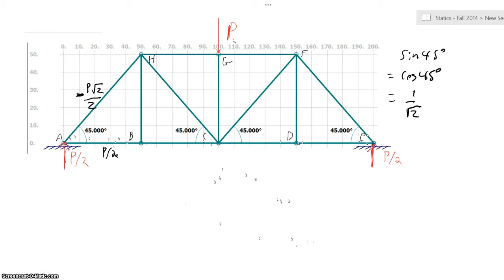Moving forward, we can quickly identify that member BH is a zero-force member. If we drew our force diagram at B, we can see that there's going to be no y-direction forces to oppose on the joint at B to oppose the force of BH. And so we know that BH is a zero-force member. Identifying zero-force members quickly helps us to speed up the analysis of our truss.